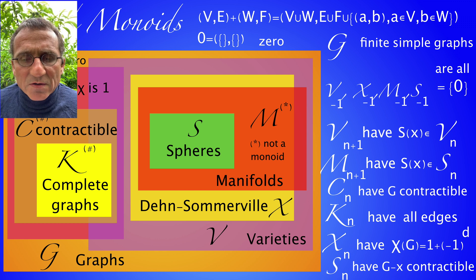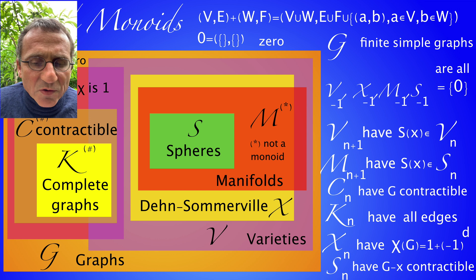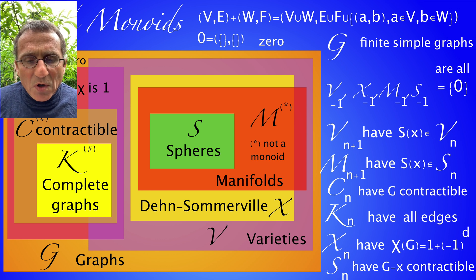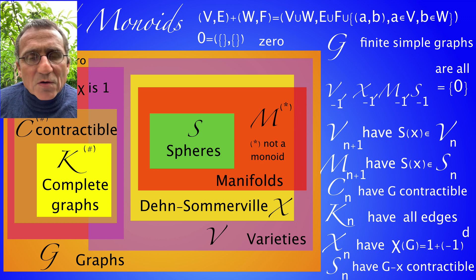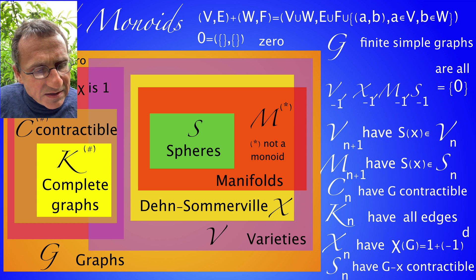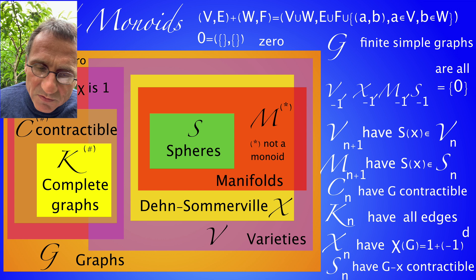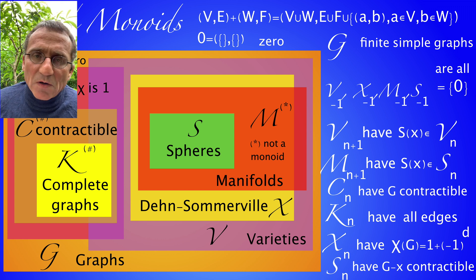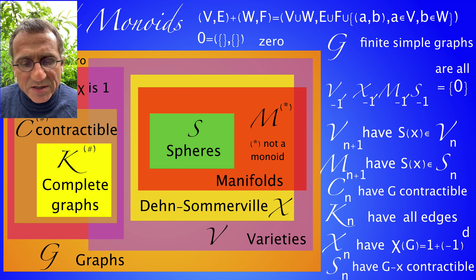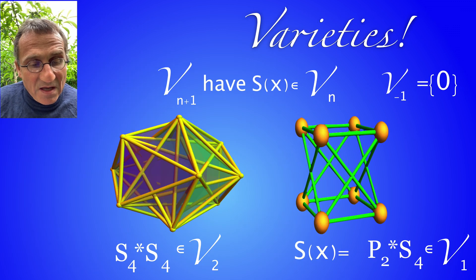Some of the graph classes are monoids like varieties or spheres. Others like discrete manifolds are not monoids, they are not closed under the joint operation. There is a nice class, the Evansommerville class of graphs, which is a monoid and which has properties close to manifolds or spheres. Every odd dimension of discrete manifold is there.